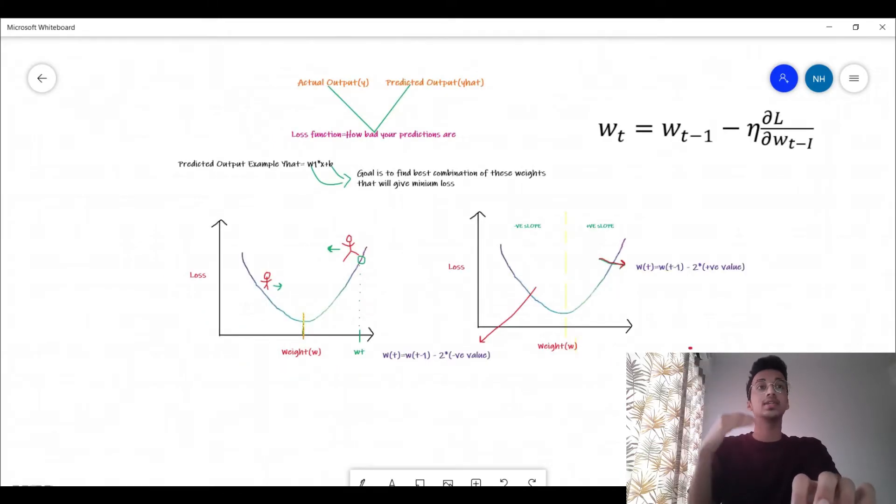Just to give you a gist, gradient descent was an algorithm used to find the best set of weights that are going to give you a minimum loss. This was the equation for gradient descent: basically a weight at a particular time step W_t is equal to weight at the previous time step W_{t-1} minus a learning rate η into the slope of loss function with respect to the weight ∂L/∂W_{t-1}.